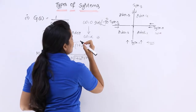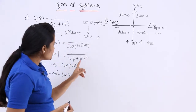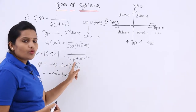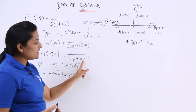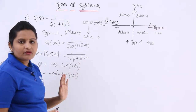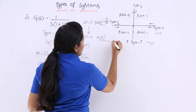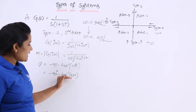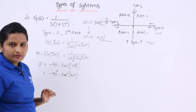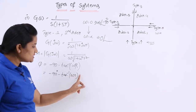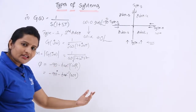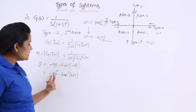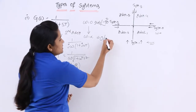At ω = ∞: substituting into the magnitude gives 1/∞ = 0, so the magnitude is 0. For the phase, tan⁻¹(ω·T) at ω = ∞ gives tan⁻¹(∞) = 90°. So the total phase is −90° − 90° = −180°. That means at ω = ∞, the magnitude is 0 at a phase angle of −180°.